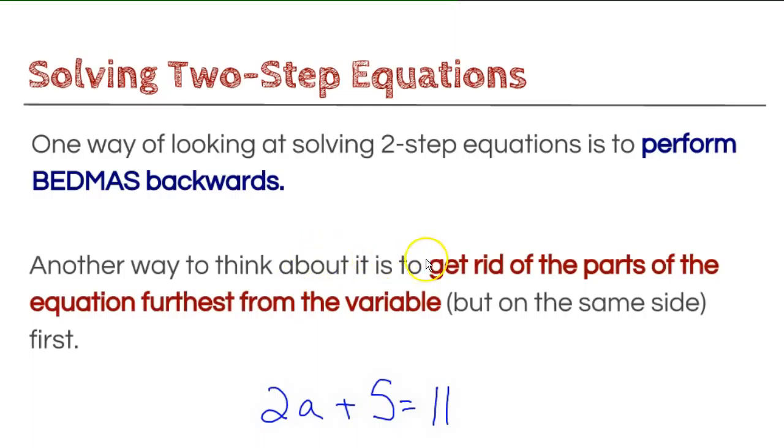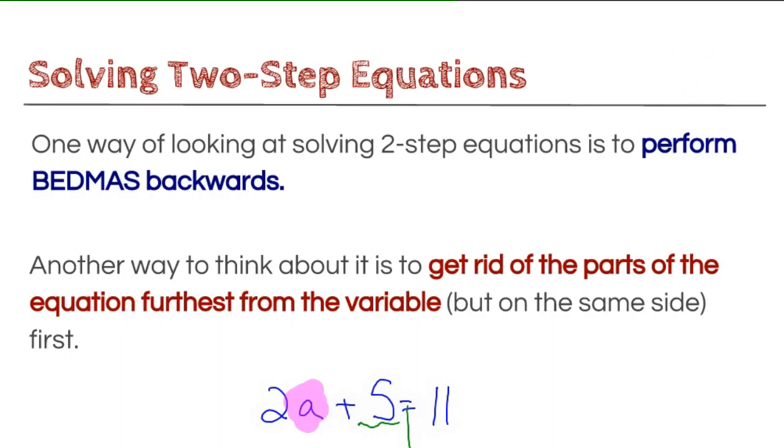And for me, it is, you want to get rid of the parts of the equation farthest from your variable, but on the same side of the equal sign first. Okay, so what I mean by that is I'm going to first need to locate my variable. So I'm going to locate my variable first. Here it is. And then I'm going to deal with whatever is farthest away from it, but on the same side of the equal sign. So to me, that means dealing with this 5 first. So I'm going to go through a series of examples that will help you to sort out how to manage questions like this.